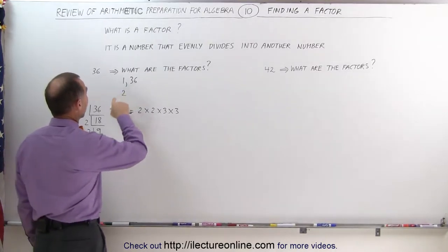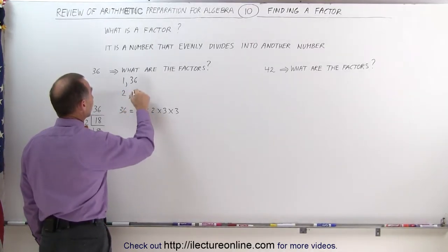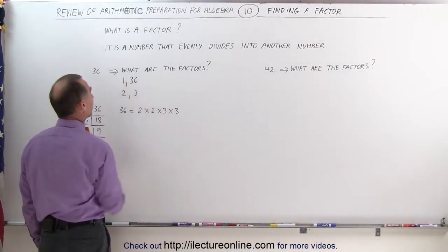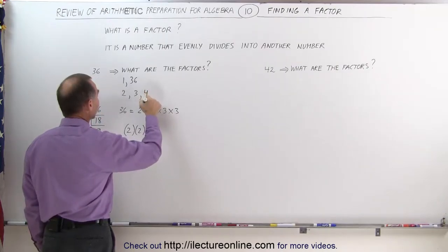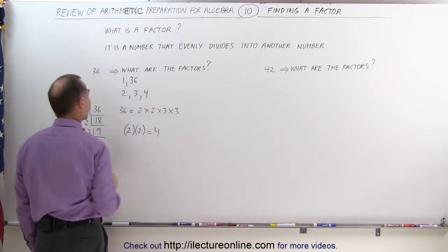Once you have all the factors in terms of multiples of the smallest prime numbers that fit into the number 36 evenly, you can come up with all the other factors by multiplying these together. For example, factors, of course, at this point become 2 and 3 as well as 1 and 36. But when you multiply 2 times 2, you get 4, and that is also a factor of 36. 4 goes into 36 evenly.